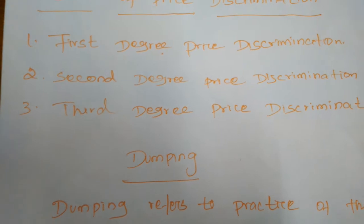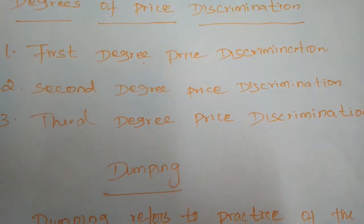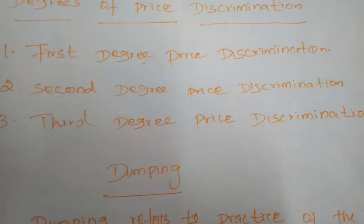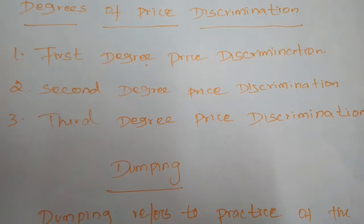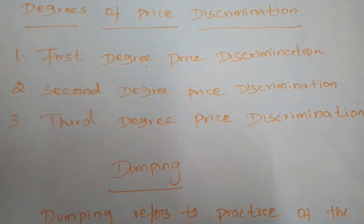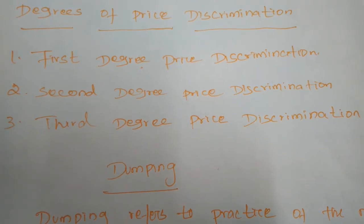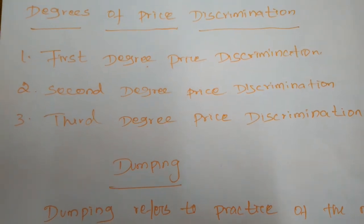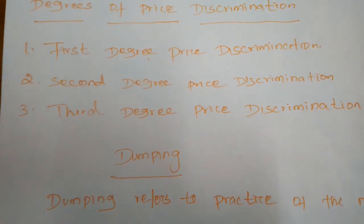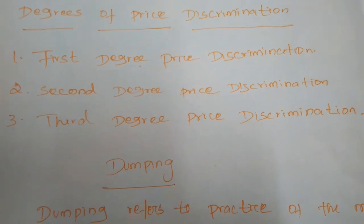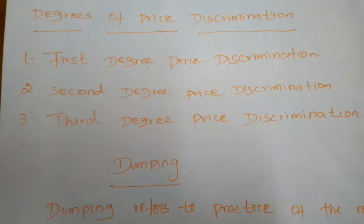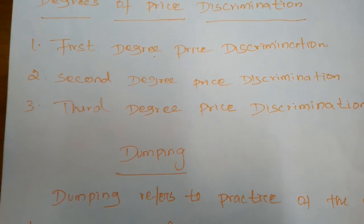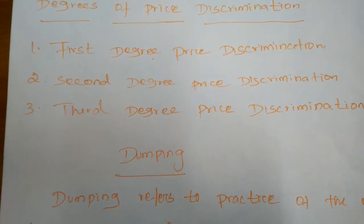Under first degree price discrimination, the monopolist charges the maximum price that the buyer is willing to pay. Normally when we go to the market, some consumers are always ready to pay whatever amount is fixed by the seller — without questioning or bargaining. When consumer behavior is like that, the seller charges the maximum price.